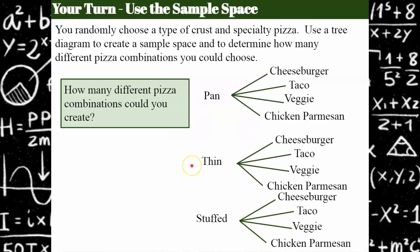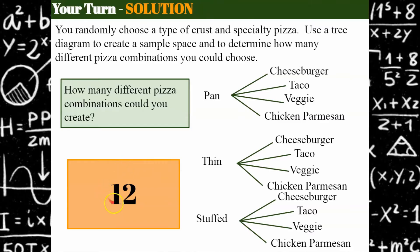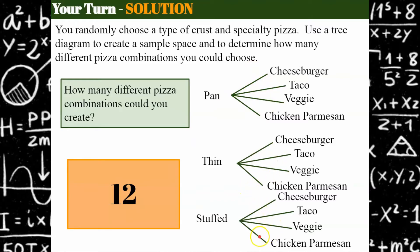Now I want you to tell me how many different pizza combinations you could create from this pizza place. Go ahead and pause, look over your sample space, and come back when you're ready. Welcome back — I hope you discovered that there were 12 different outcomes: pan cheeseburger, pan taco, pan veggie, pan chicken parm, and then the same four with thin and the same four with stuffed, giving us 12 different branches to our tree diagram.